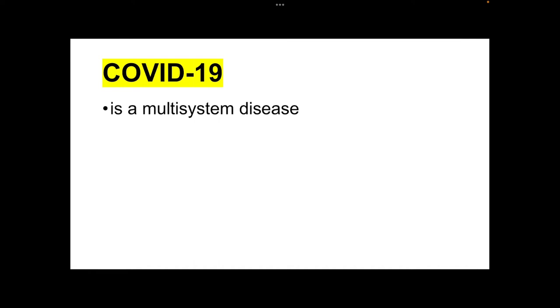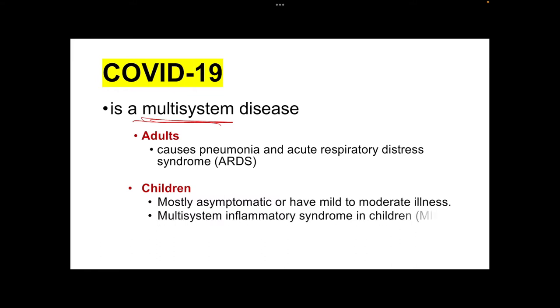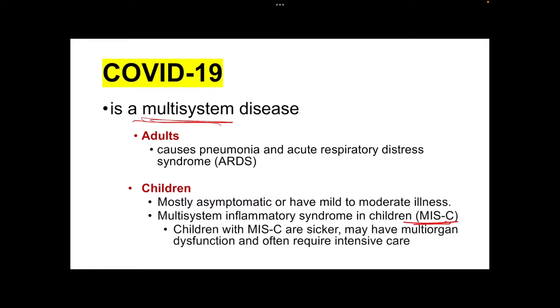COVID-19 is a multi-system disease — not only a localized respiratory infection. It can involve immunological, inflammatory, and coagulative processes. It infects both adults and children. In adults, it typically causes pneumonia and acute respiratory distress syndrome. In children, cases are mostly asymptomatic or mild to moderate, though the multi-system inflammatory syndrome in children, or MISC, can cause multi-organ dysfunction requiring intensive care.